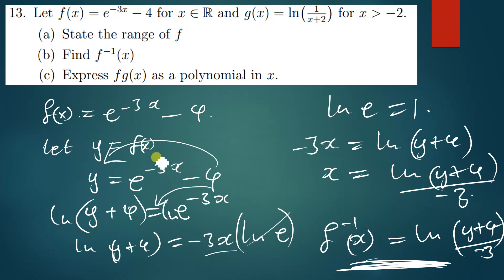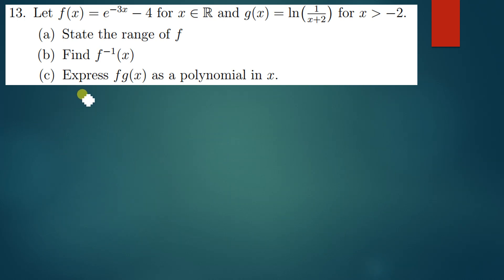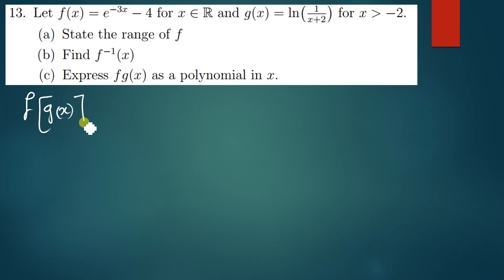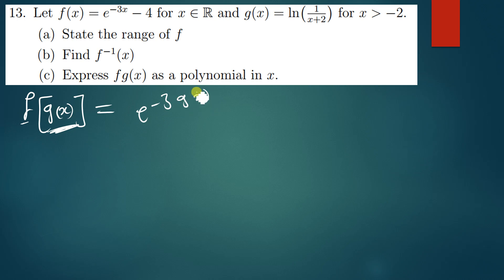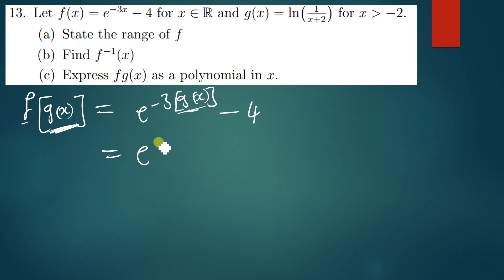We move on to the last question, which asks us to express f(g(x)) as a polynomial — in other words, to find the composite function combining f and g of x. So f(g(x)) means in f, wherever there is x, we put g(x). So our f is e to the power negative 3 times g(x), minus 4. We know g(x) has been given as ln(1 over x plus 2).